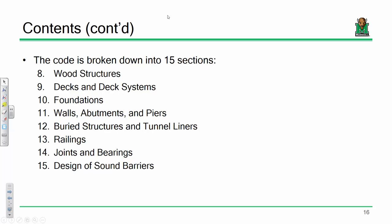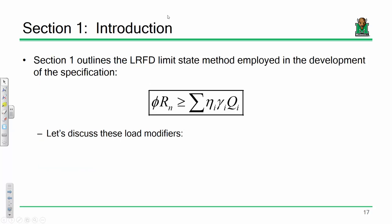Section nine is on decks and deck systems. You're going to find that depending on the type of bridge that you design, the deck system is either going to be really simple, or if you all decide to go with some segmental slab bridge or something, it might be the entire bridge. So it's something to think about when you start vetting your concrete alternatives. Foundations, walls, abutments, piers, buried structures, so culverts, things like that, railings, joints and bearings, and then sound barriers. Sound barriers is actually a relatively new addition to the bridge spec. It's just they weren't regulated by the bridge spec. So that's actually somewhat new.